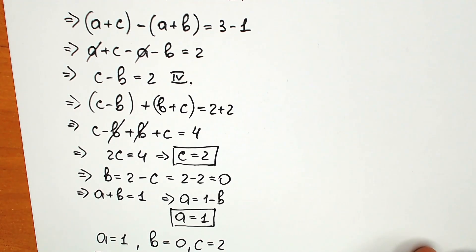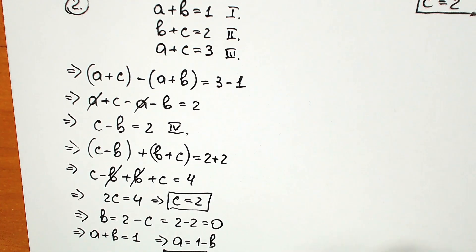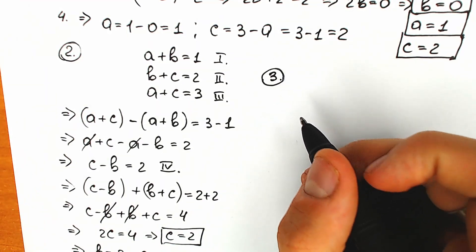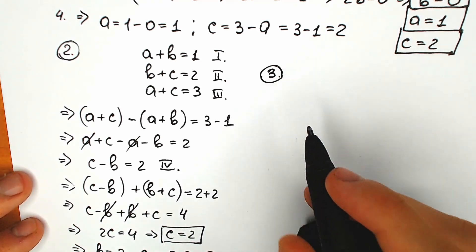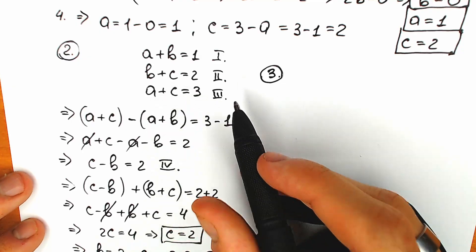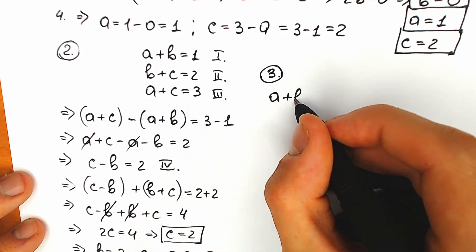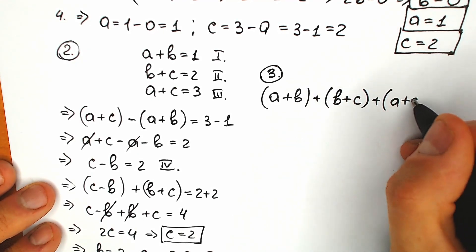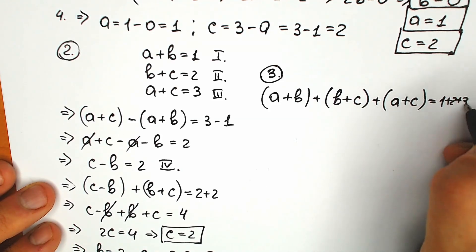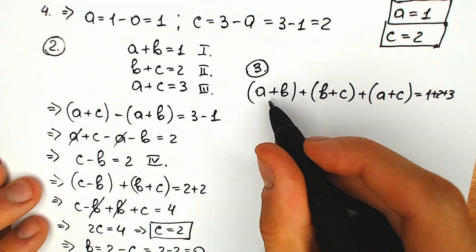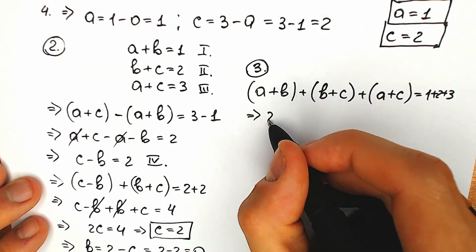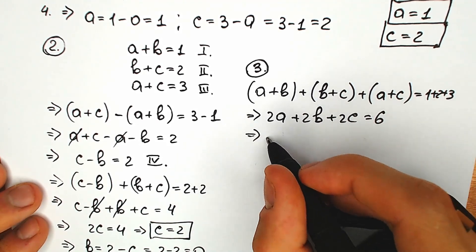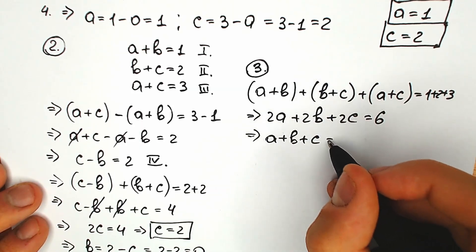We have the third method. A lot of students may ask how can we solve this in a different way. This method uses the sum of variables. Let's add all three equations: a plus b plus b plus c plus a plus c equal to 1 plus 2 plus 3. Simplifying, we get 2a plus 2b plus 2c equal to 6, so a plus b plus c is equal to 3.